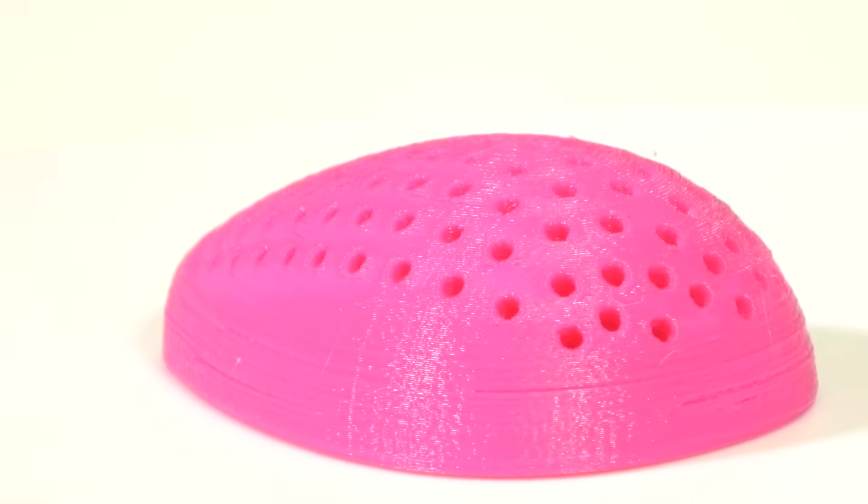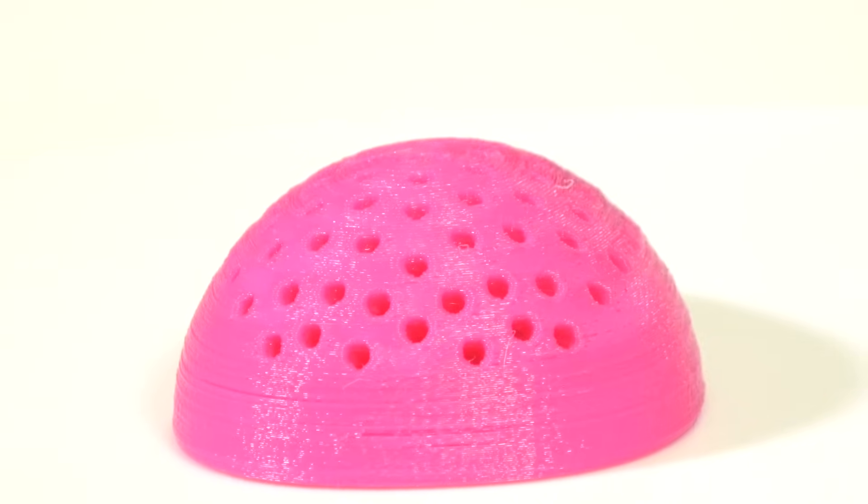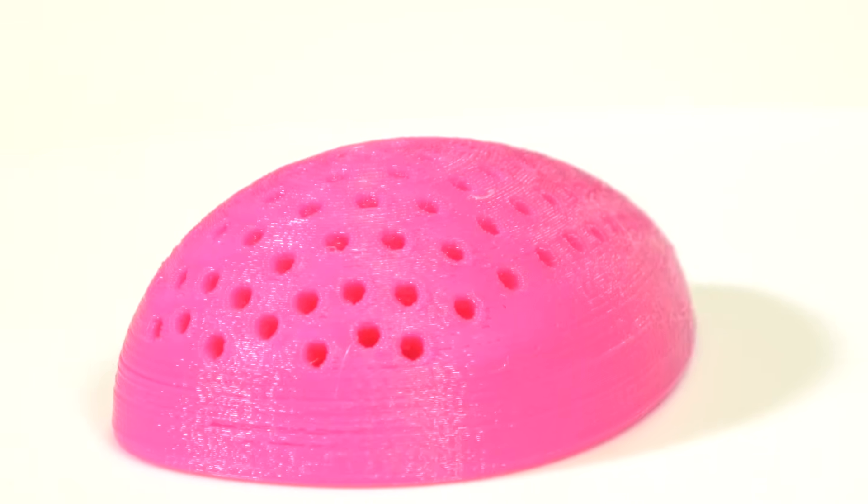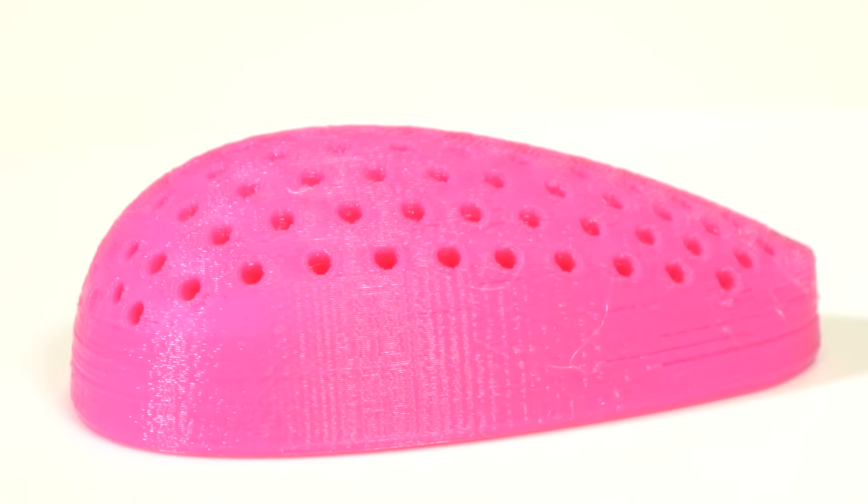There's this texture on it. This model actually shows a little bit of layer inconsistencies but it also shows this strange texture. There's wisps of filament that are coming off of it and that might be able to be controlled with temperature or retraction settings but this model as well as everything I've printed on this thing has this weird texture.